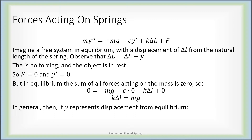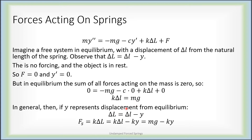In general, if y represents displacement from equilibrium, we have delta capital L equals delta little l minus y, and the spring force Fs equals k times delta capital L. Distributing gives k times delta little l minus ky. But we've already determined that k times delta little l equals mg. So the spring force is given by mg minus ky, where y is the displacement from equilibrium.